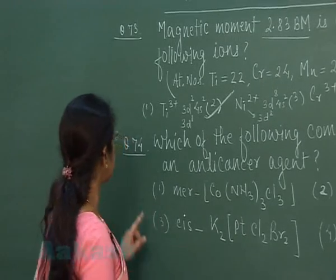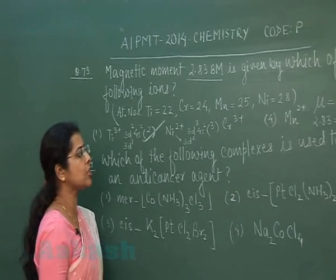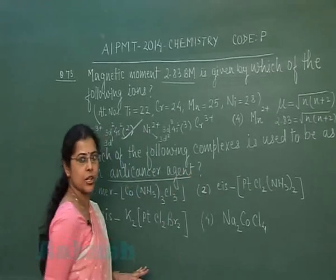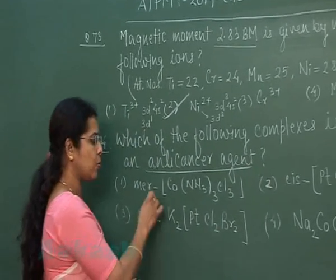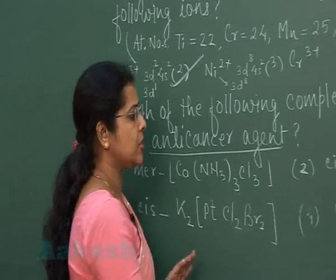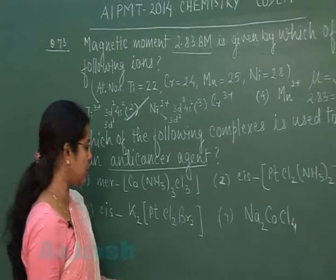Next question is question number 74. Which of the following complexes is used to be as an anti-cancer agent? First option is mer-[Co(NH3)3Cl3]. Second option is cis-[Pt(Cl)2(NH3)2].